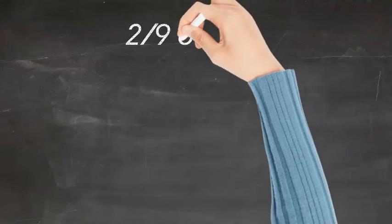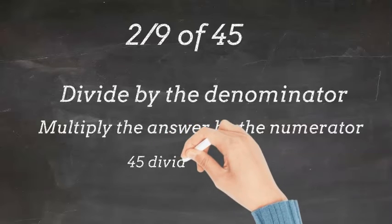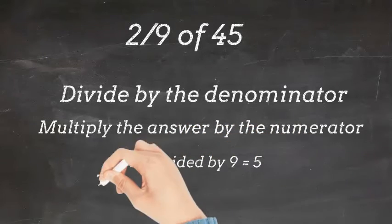Finally, let's try 2 ninths of 45. First we will do 45 divided by 9, which equals 5.